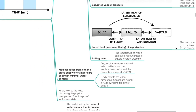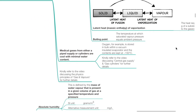Medical gases from either a pipe supply or cylinders are cool with minimal water content. Oxygen, for example, is stored in bulk within a vacuum insulated evaporator and the contents are kept at negative 150 degrees Celsius. Refer to the video discussing central gas supply, gas cylinders and gas and vapors for further details.